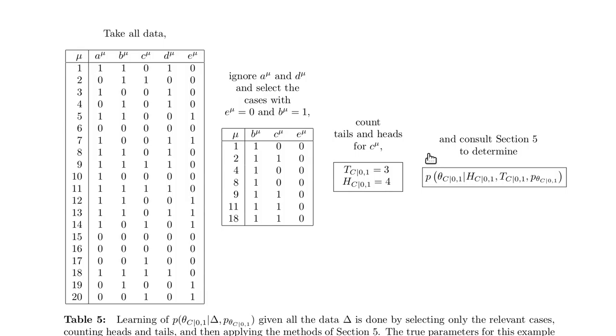The idea is first of all we have all our data. In this case I assume we have 20 samples of the whole network, obtained by Gibbs sampling for instance. And we want to learn the theta for C given 0,1. That's shown down here. That means that's the case where E=0 and B=1.